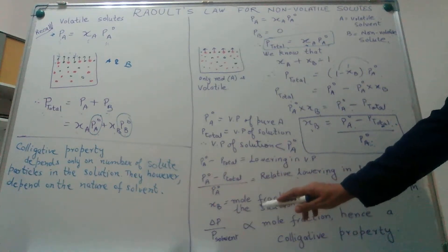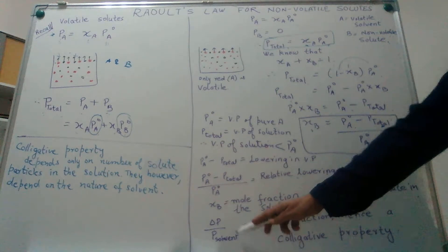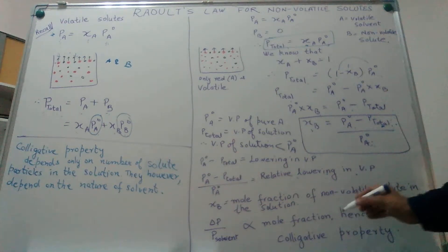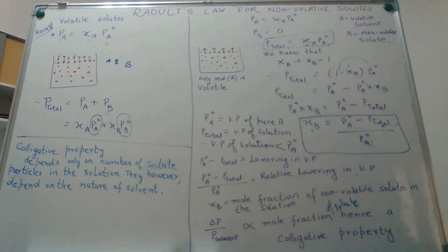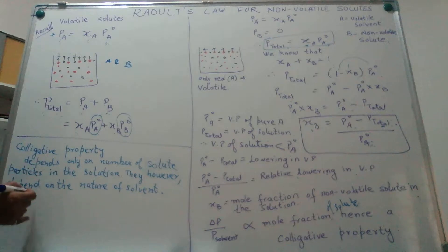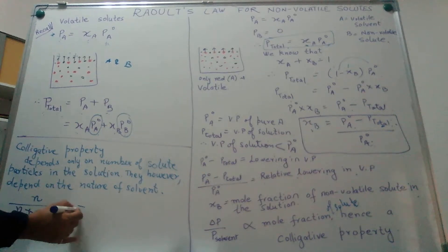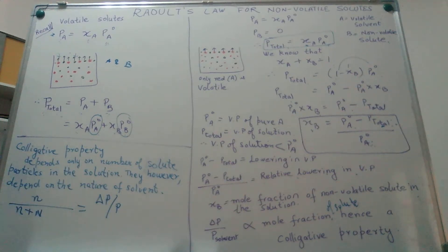So simply we can also say that delta P divided by the vapor pressure of pure solvent is directly proportional to the mole fraction of the solute present in the solution. Now, the question that came to our mind was why complicate things? Now we know that mole fraction is the number of moles of component A divided by the total number of moles in solution. This equals delta P divided by the vapor pressure of the pure solvent.